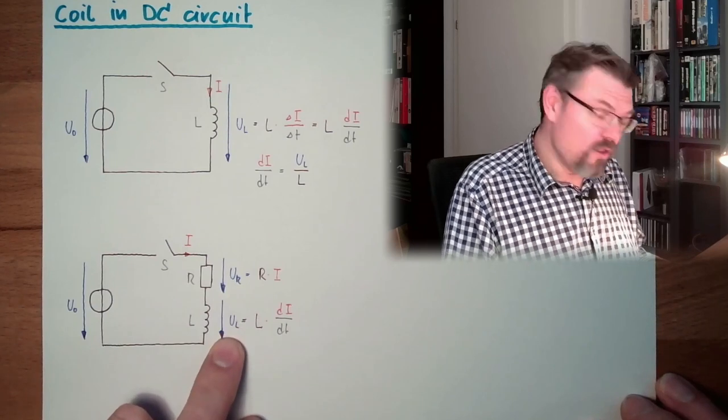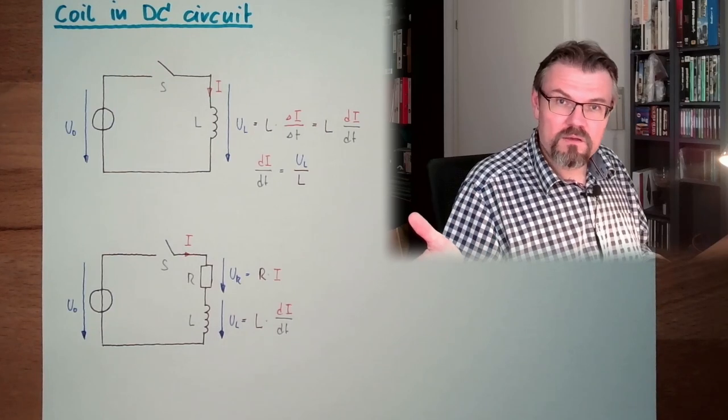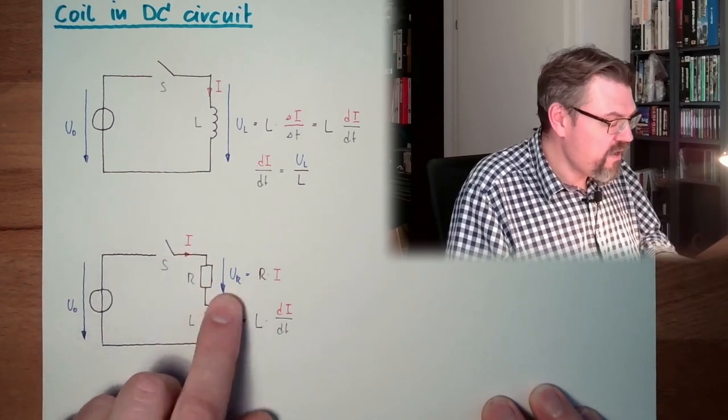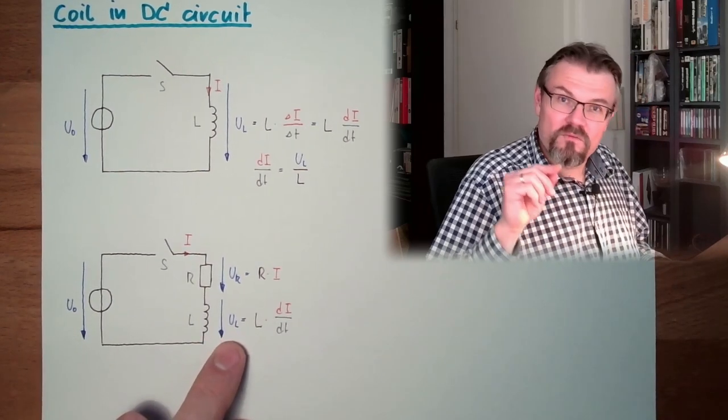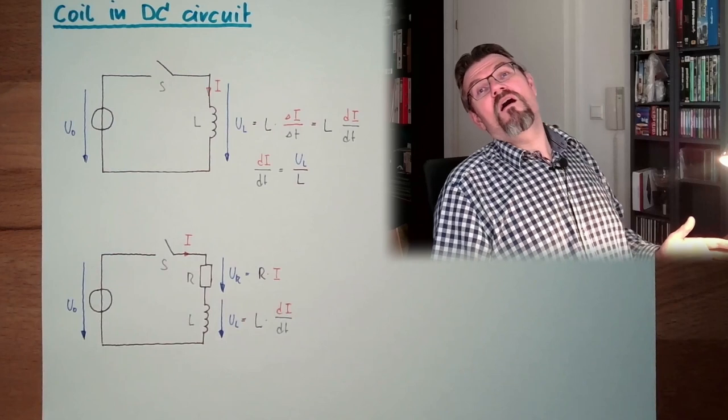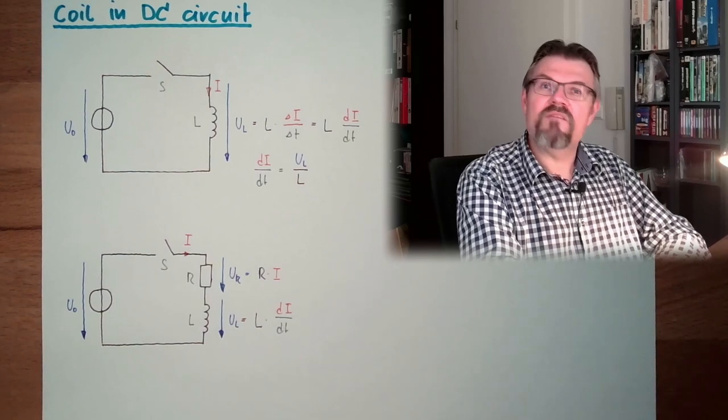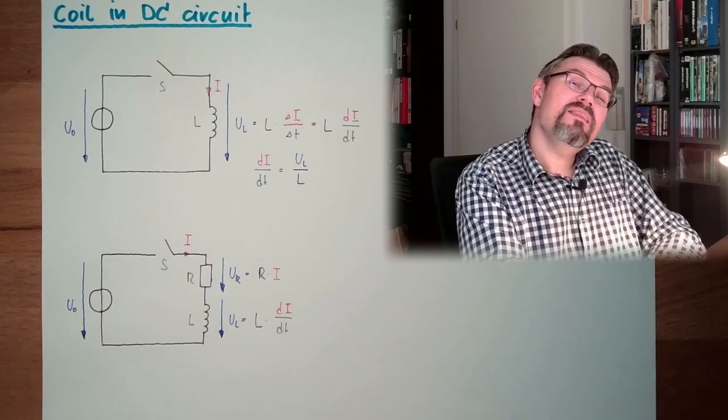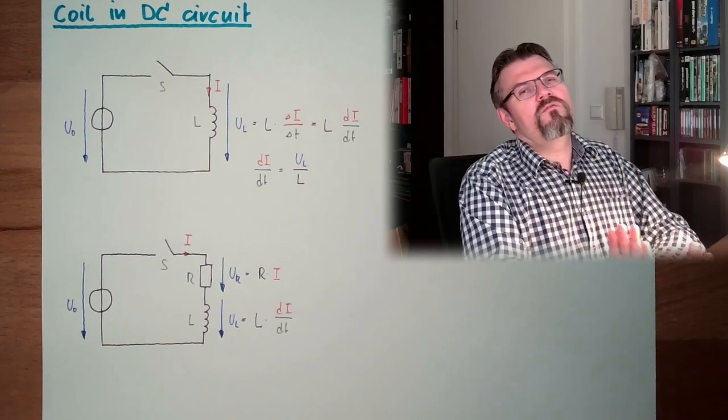And then in the end, we will end up in a situation where there is enough current running, that UR equals U zero and UL is zero. And as soon as we reach the state that the voltage at the coil is zero, we don't have any change rate of the current anymore. And the current remains constant. And then everything is leveled. Every element is happy. The only thing L did want is that the magnetic flux is constant. If the current is constant, the magnetic flux is constant, there is no need to use any UL.